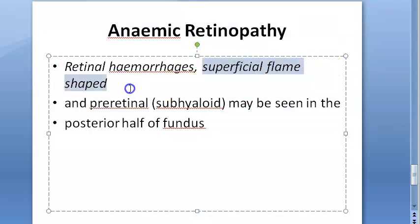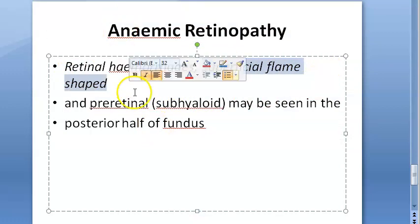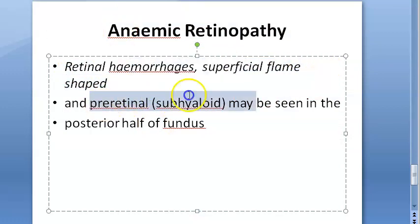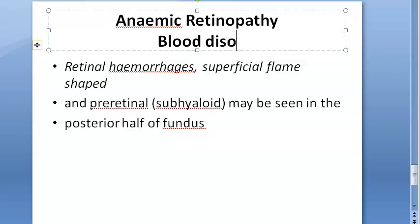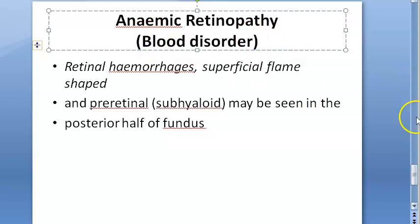In anemic retinopathy — that is, retinopathy due to blood disorders — you can also see flame-shaped hemorrhages. These are superficial flame-shaped retinal hemorrhages. Additionally, pre-retinal hemorrhages can also be present in anemic retinopathy.